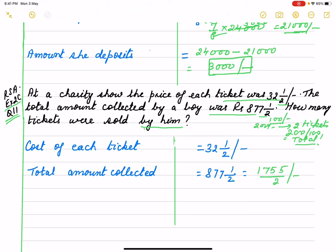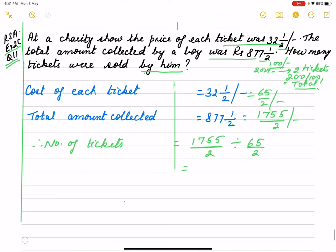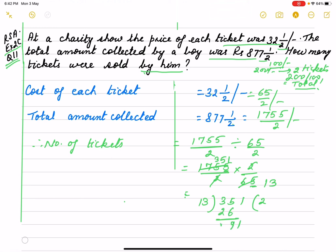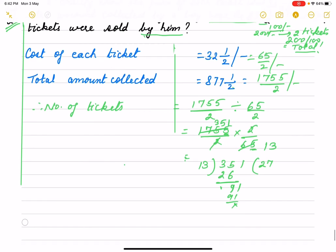Cost of each ticket is thirty-two and a half, which is sixty-five by two rupees. Number of tickets equals one thousand seven hundred fifty-five by two divided by sixty-five by two. When there is a division sign, we put a multiplication sign and take the reciprocal. The twos cancel. Dividing one thousand seven hundred fifty-five by sixty-five gives twenty-seven. So the answer is twenty-seven tickets.